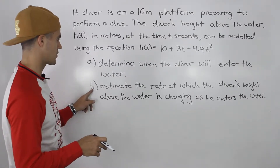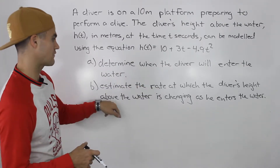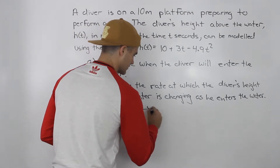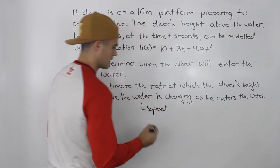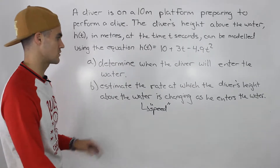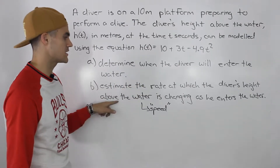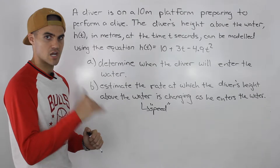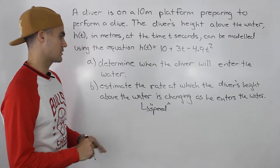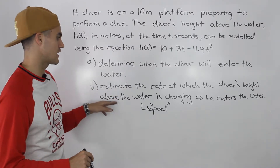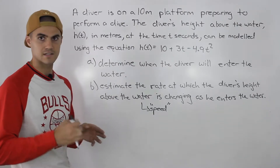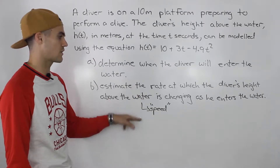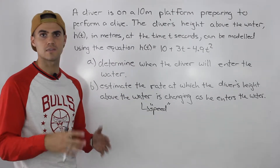One thing I want to mention about part b and the wording of it — 'estimate the rate at which the diver's height above the water is changing' — basically they're just asking for the rate of change or the speed of the diver as he enters the water. Usually they'll just say 'what is the speed of the diver as he enters the water,' so we'll be finding the instantaneous rate of change. They can word it in this confusing way, but it means the same thing.